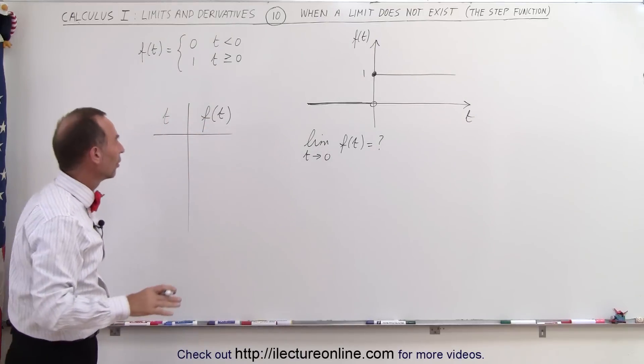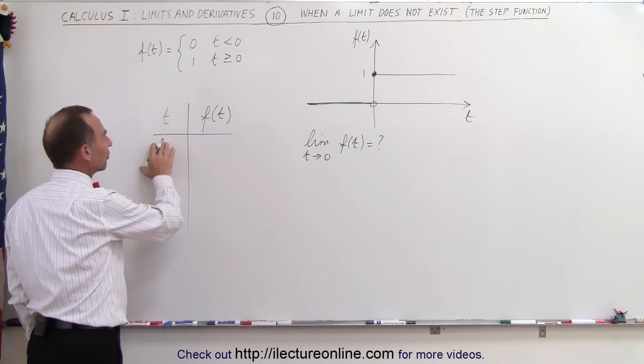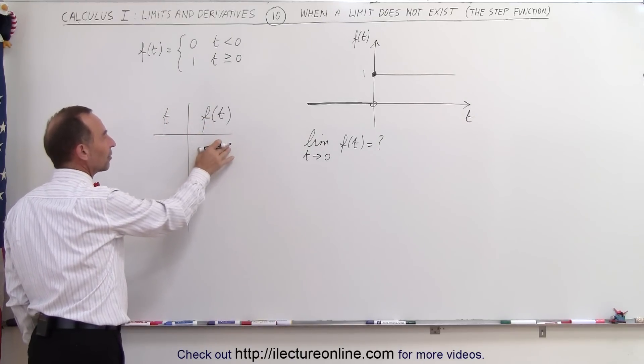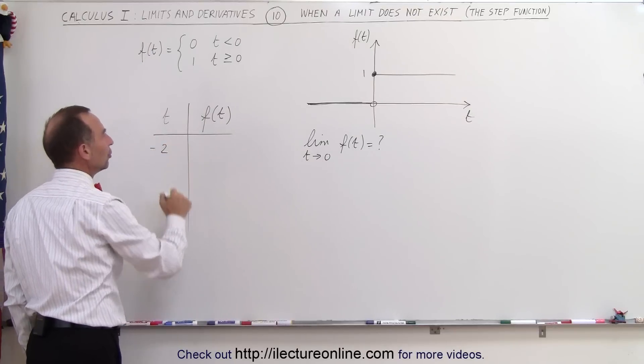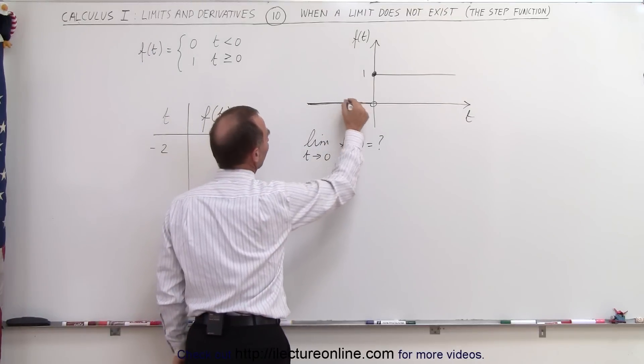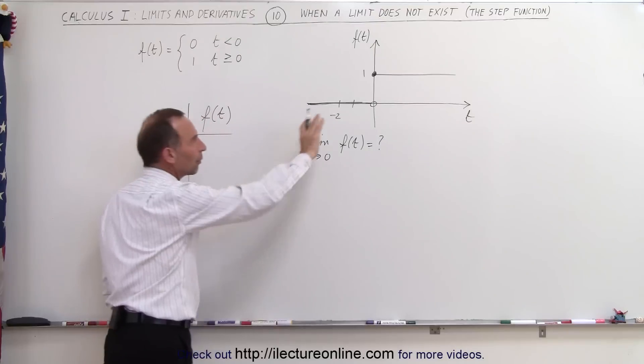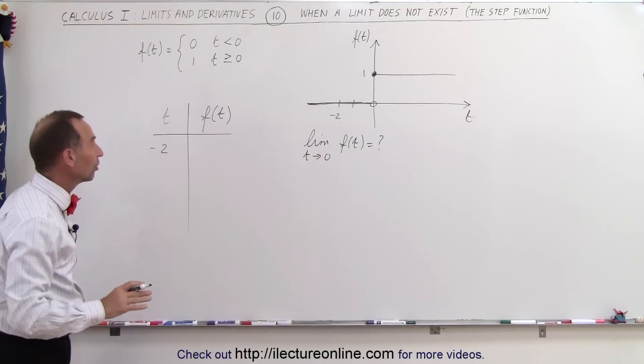Well, let's say that we plug in some values for t and then we find the corresponding values for f of t. So let's say that t is equal to negative 2, so we start at negative 2 right here and we move our way down to approaching 0.